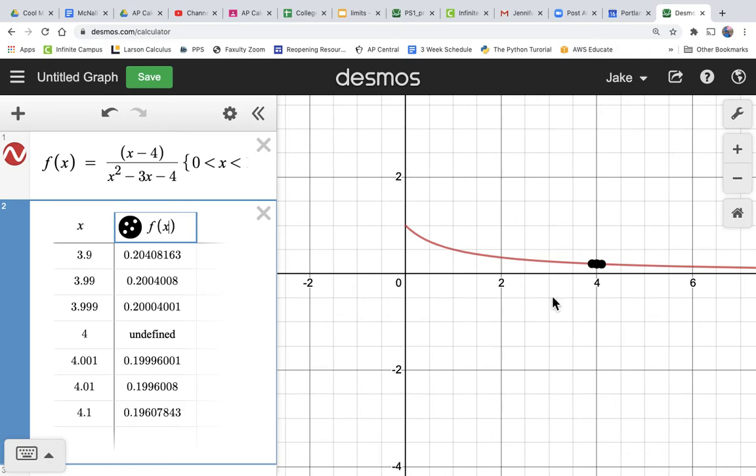And we see that over here on the graph. So as we get super close to 4, the limit is—you know, this is 2, so this would be 1, 2, 3.